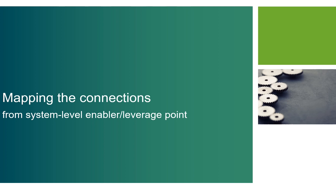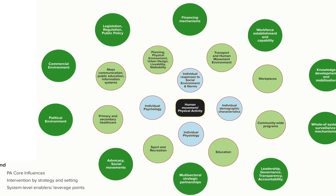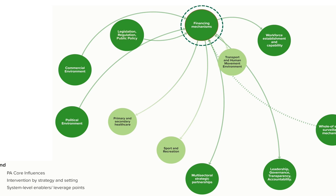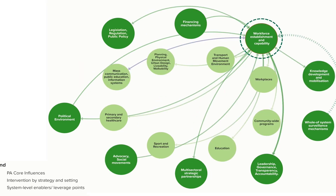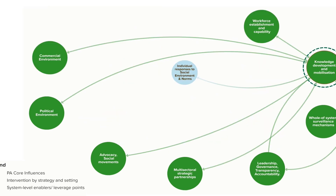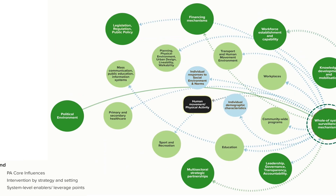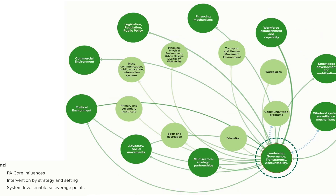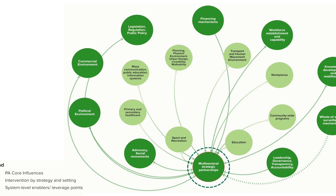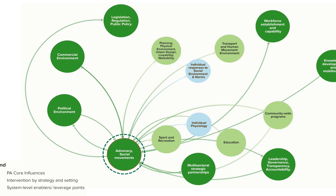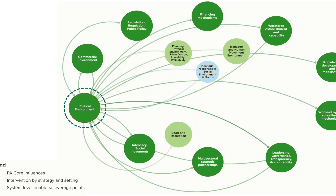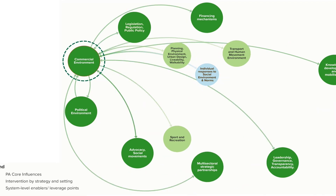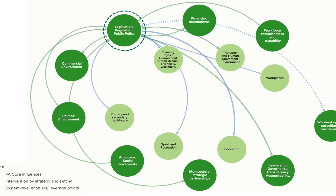Now in this section we'll look at the connections from the 10 system level enablers and leverage points — the ones in the outermost layer in dark green. We see system linkages for financing mechanisms, workforce establishment and capability, knowledge development and mobilization, whole of systems surveillance, leadership, governance, transparency and accountability, multi-sectoral strategic partnerships, advocacy and social movements, the political environment, the commercial environment, and legislation, regulation, and public policy.